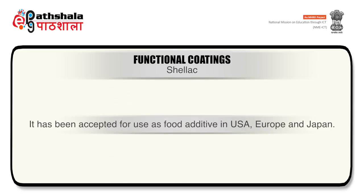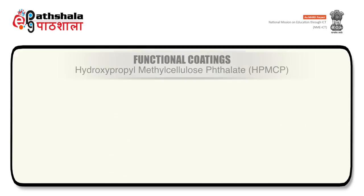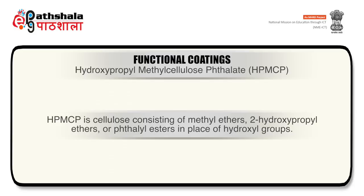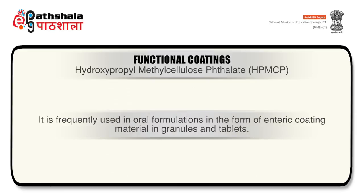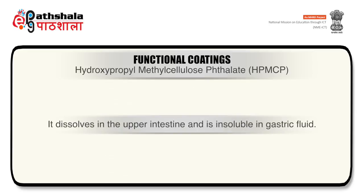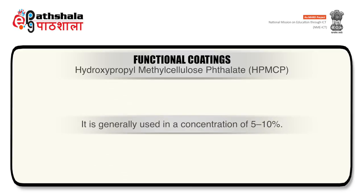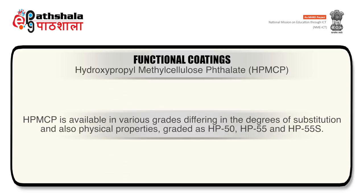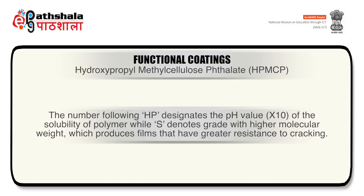HPMCP (hydroxypropyl methyl cellulose phthalate) is cellulose consisting of methyl ether, 2-hydroxypropyl ether, or phthalyl ester in place of hydroxyl groups. It is frequently used in oral formulations as enteric coating material in granules and tablets. It dissolves in the upper intestine and is insoluble in gastric fluid; it is generally used in a concentration of 5 to 10%. HPMCP is available in various grades differing in degree of substitution and physical properties, graded as HP50, HP55, and HP55S. The number following HP designates the pH value of polymer solubility, while S denotes grades with higher molecular weight, producing films with greater resistance to cracking.